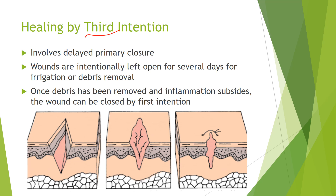Healing by third intention is a little bit of a mix between first and second intention. It involves delayed primary closure — you're not going to stitch up the wound right away. Instead, wounds are intentionally left open for several days for irrigation or removal of debris. As the wound is healing from the bottom up, a common nursing intervention is to irrigate and debride the wound of any scabs or infection in order for the granulated tissue to work its way up. Once some of the dead space has been removed and the inflammation has died down, the wound can then be closed by first intention — typically with a stitch or staple.